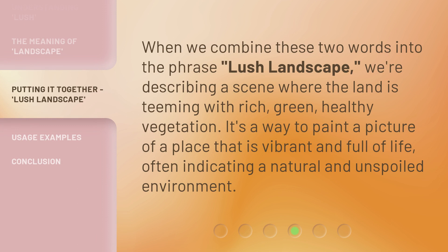When we combine these two words into the phrase Lush Landscape, we're describing a scene where the land is teeming with rich, green, healthy vegetation. It's a way to paint a picture of a place that is vibrant and full of life, often indicating a natural and unspoiled environment.